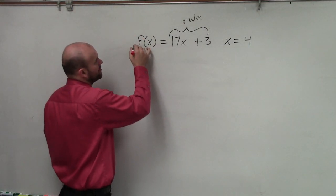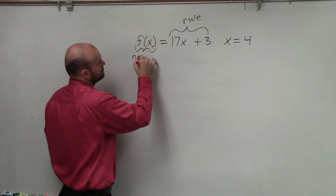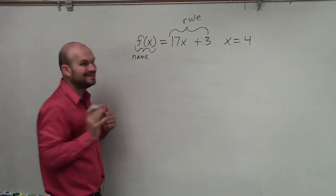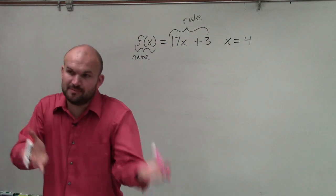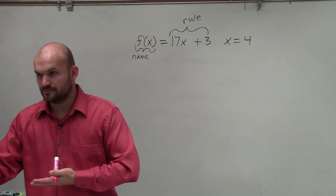Here, this f of x is what we kind of call our name, OK? Now, what's important about this is remember a function—you have an input, and then you get an output, right?